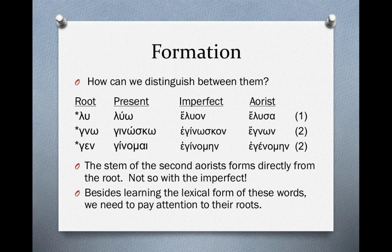Besides learning the lexical form of these words, we need to also pay attention to the roots. When we're studying vocabulary words, we obviously want to learn the lexical form — that's how we learn the words. But we also want to look to the right in parentheses, because the author puts the root there marked by an asterisk. We want to be familiar with those roots, especially if they follow the second pattern where the root is modified slightly in the present tense, or the third pattern where the root changes completely.